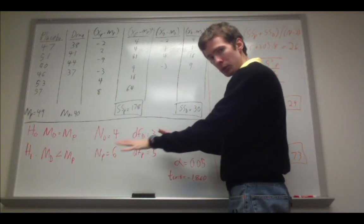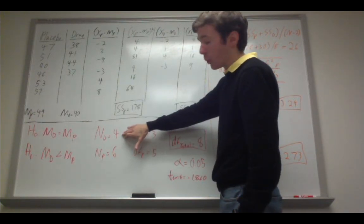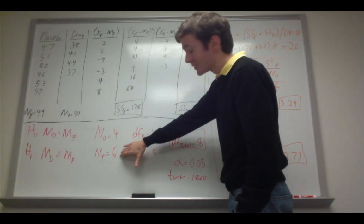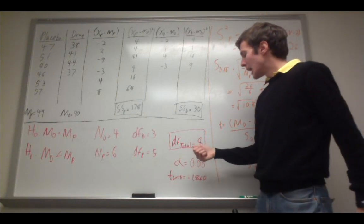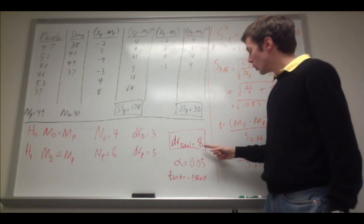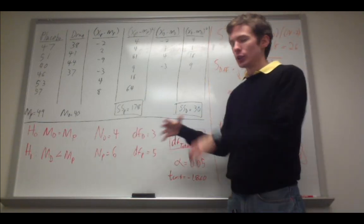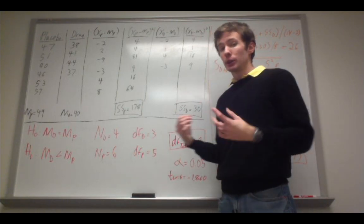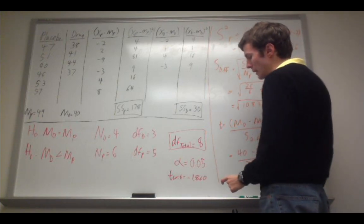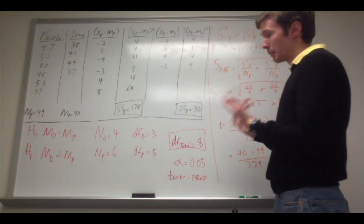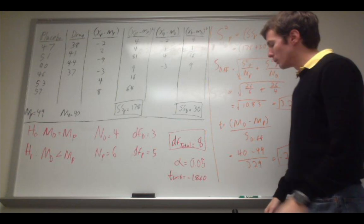These are my parameters and statistics for my groups. Here I have the number of people in the drug group, which is 4, the number of people in the placebo group, which is 6, and the degrees of freedom for each, which is simply n minus 1. The only difference here is now I calculate degrees of freedom total, which is going to be 8. I can either sum up both degrees of freedom, or just take the total number of subjects and subtract by the number of groups, which is 2. I have an alpha threshold of 0.05, and since this is a one-tailed test — I hypothesize that taking the drug is going to reduce anxiety — the t-critical is negative 1.86.